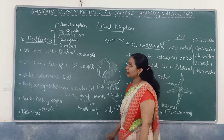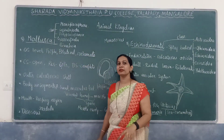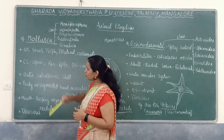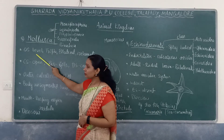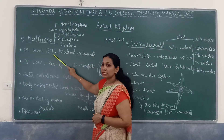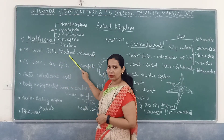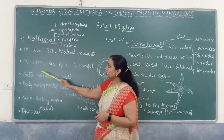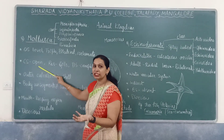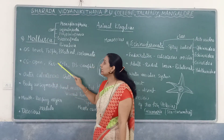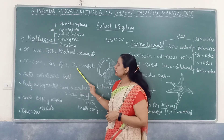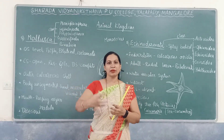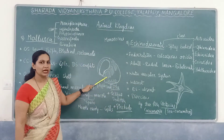The next phylum is phylum Mollusca. Mollusca refers to the presence of an external shell. Phylum Mollusca has organ system level of organization, is triploblastic, has bilateral symmetry, and is coelomate. The circulatory system is open, without arteries and veins. Respiration is through gills and the digestive system is complete. Their body mainly consists of an outer shell.